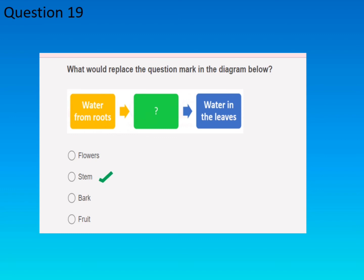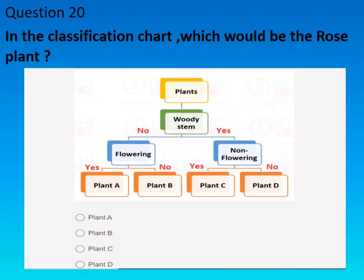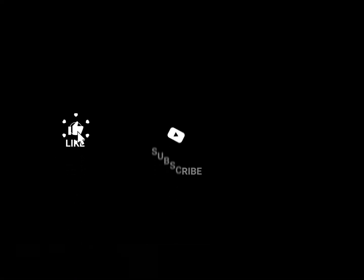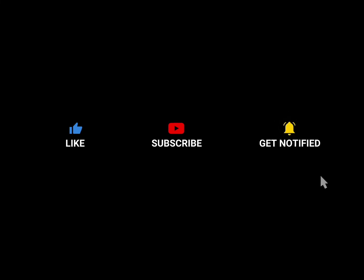The right answer is option B: stem. Question number twenty: in the classification chart, which would be the rose plant? The right answer is option B.